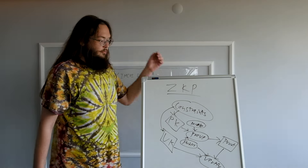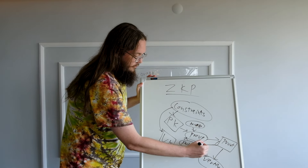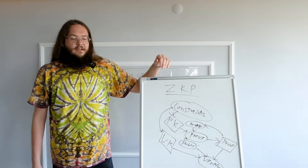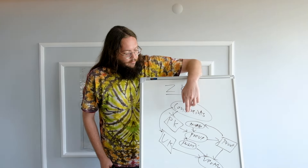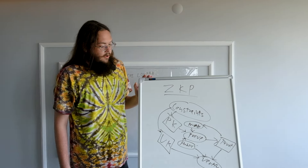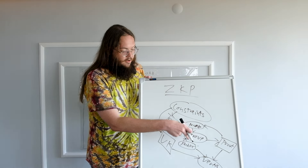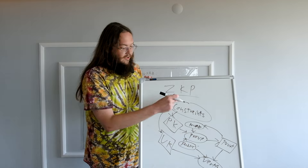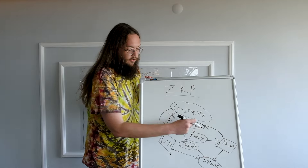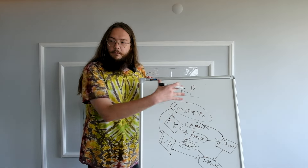A recursive zero-knowledge proof is basically when you do this same system but also take the proof and treat it as an input — specifically, you put it in as a private input to the next proof. That's the recursive part. The constraints that you write down are reasoning about these inputs and doing the whole verification process inside the constraints — the verify step is stuffed into the constraints. This lets you keep feeding proofs back in over and over, building up the recursive zero-knowledge proof.